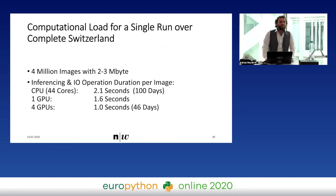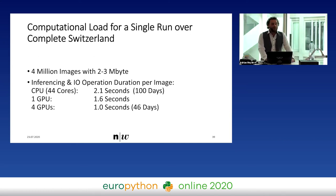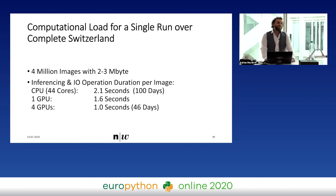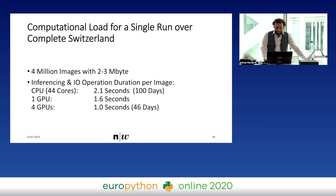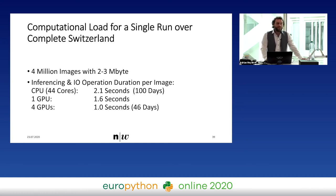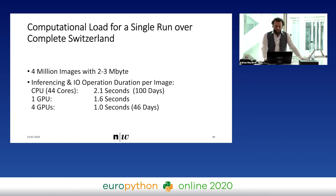The computational load for a single inferencing run over all images of Switzerland — which is 4 million images — would take 2.1 seconds per image on CPU cores and 1 second using parallelized GPUs, still resulting in 46 days of inferencing — a bit too much, to be honest. We are running into really big data problems, and we figured out that one big reason this is still taking so long is the IO — the input-output operations between the hard drives and the GPU. This is actually more about job scheduling than the model itself.